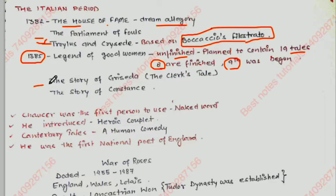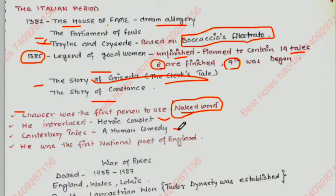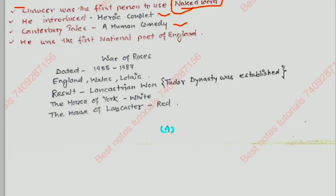He wrote the story of Griselda — the Clerk's Tale — and the story of Constance. Chaucer was the first person to use the naked word. He introduced the heroic couplet. In the English period, if we talk about Canterbury Tales, he is called a human comedy and he was the first national poet of England. As you can see in the notes, you will see only keywords — when you make notes just keep keywords to increase revision speed.